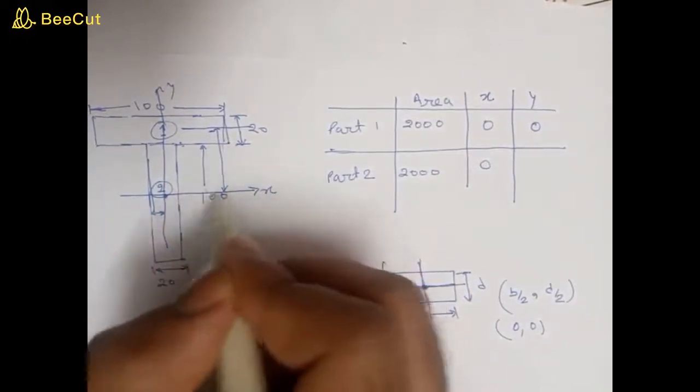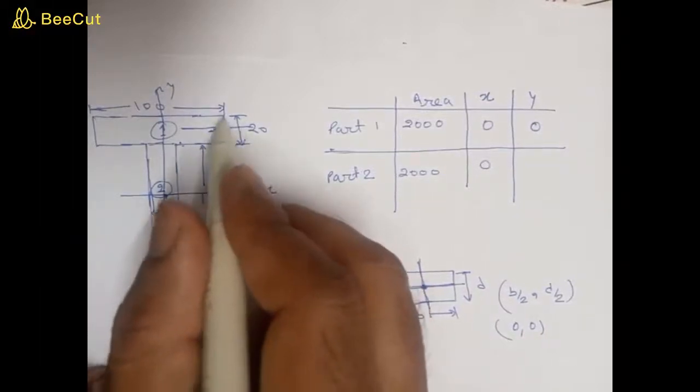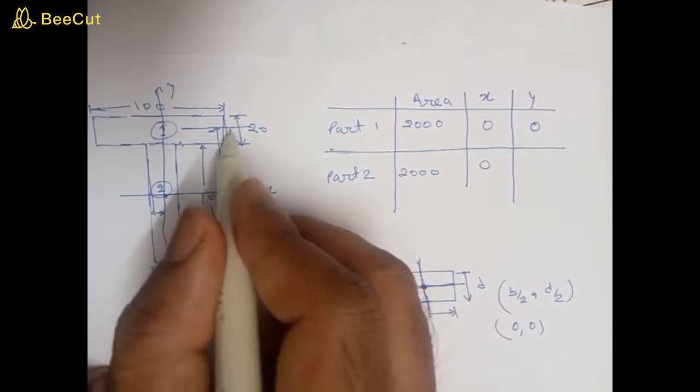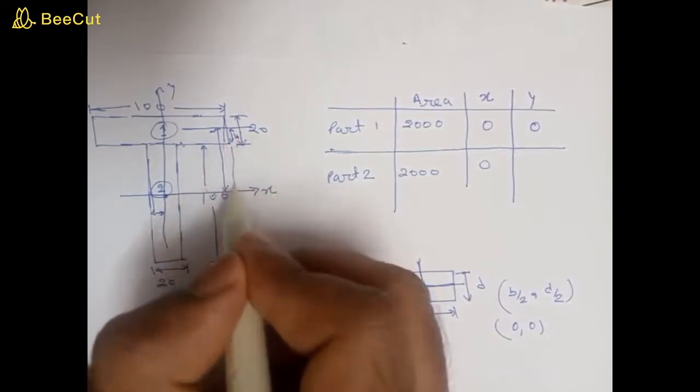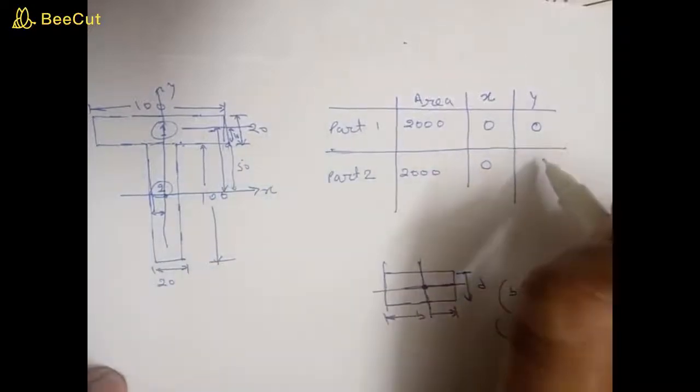So half of this will be 50, this is 50, plus half of this 20 by 2 is 10, this is 10, this is 50, so 50 plus 10 will be 60.